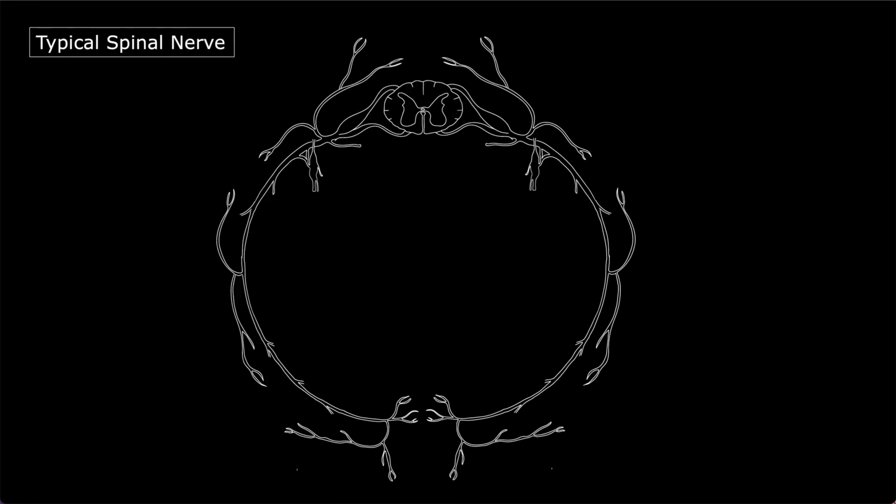Let us start labeling it. This structure you are looking at is the spinal cord — a section of spinal cord. From the spinal cord on both sides, the spinal nerve emerges as rootlets, both anteriorly and posteriorly. For nerves, we use the terms ventrally and dorsally.